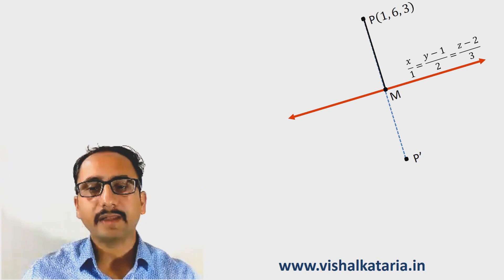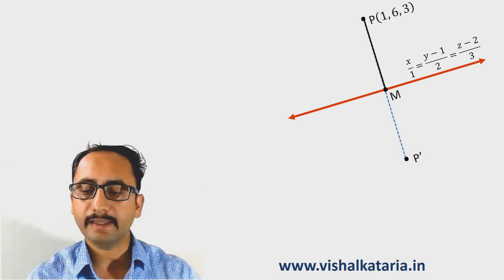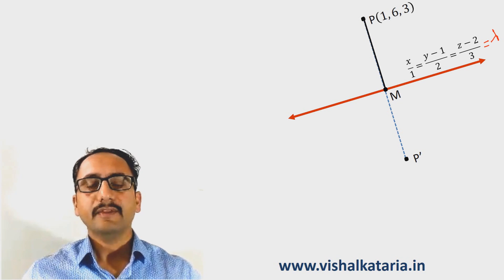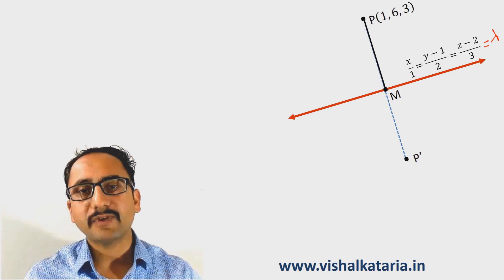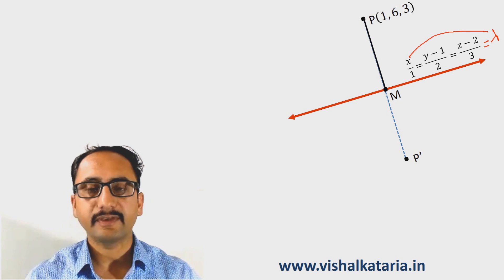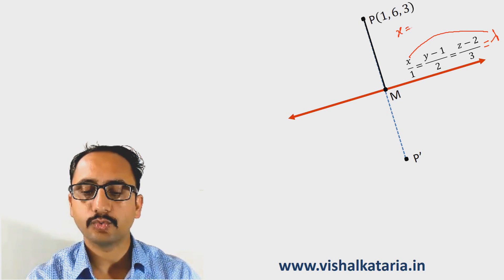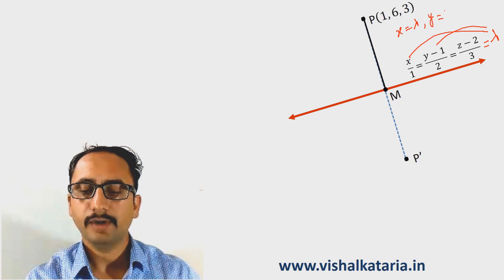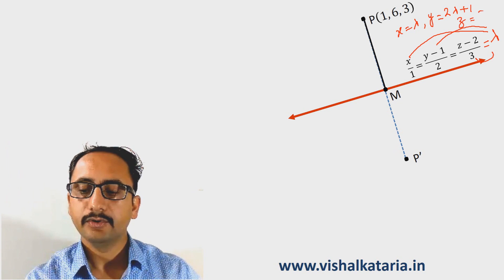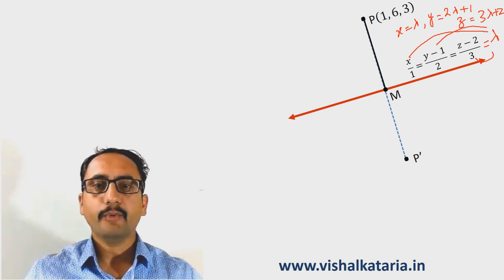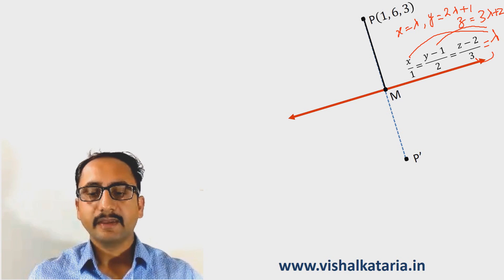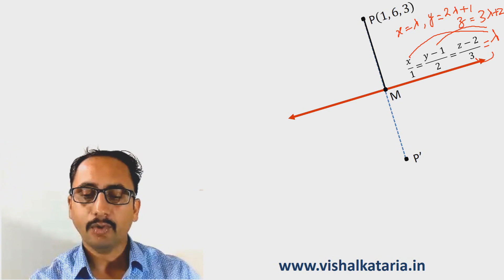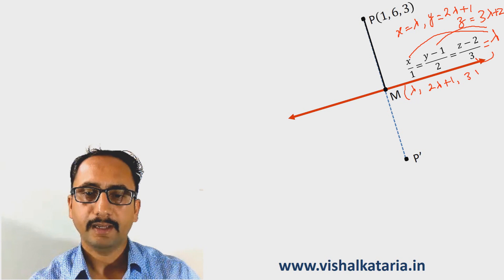If I consider x upon 1 is equal to y minus 1 upon 2 is equal to z minus 2 upon 3 equals lambda, then every point on the given line must satisfy this equation. So x equals lambda, y equals 2 lambda plus 1, and z equals 3 lambda plus 2. This means point M also lies on the given line, hence M will be of the form (lambda, 2 lambda plus 1, 3 lambda plus 2).